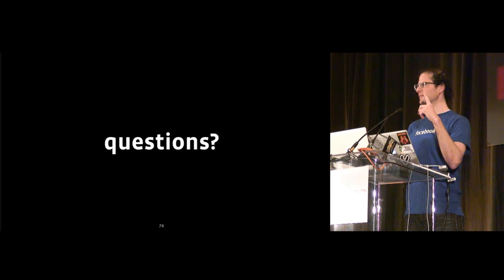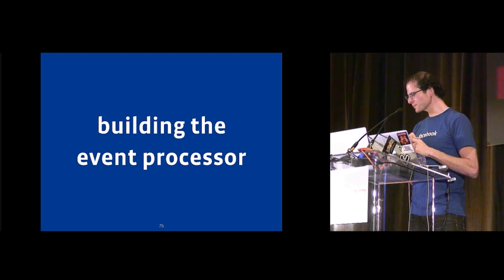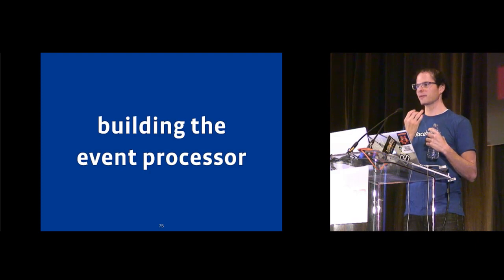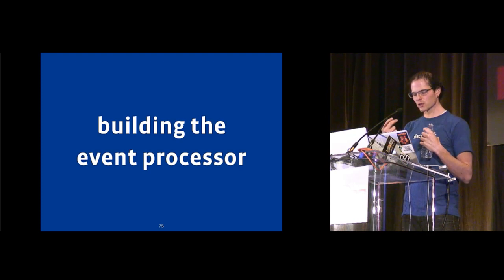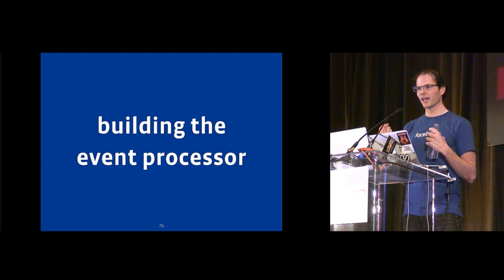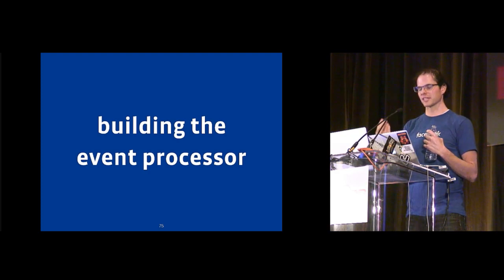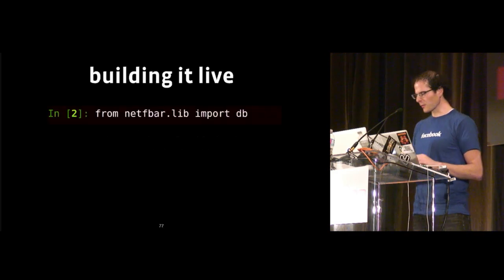A network engineer new to the team could add a new remediation by editing mapping.py and adding another file, without having to think about the rest of the system. It's just food for thought on how to make this friendly and approachable. Any questions so far? So now we're going to go into the actual fun part — the hands-on portion. We're going to build the rest of this live with IPython: the event processor that fetches items from our database, figures out what remediations to run, and can run a bunch at one time.